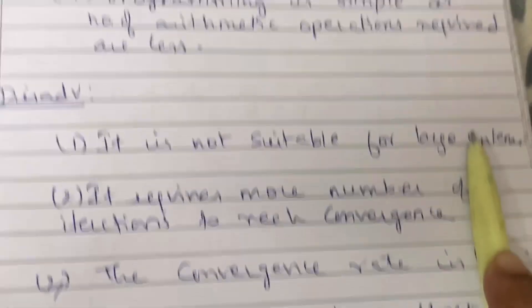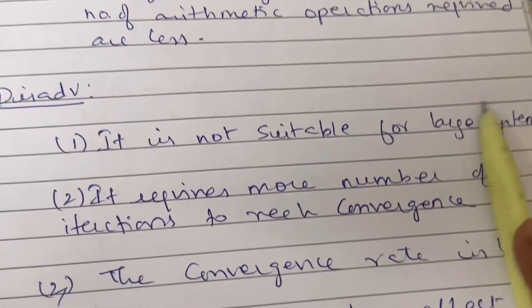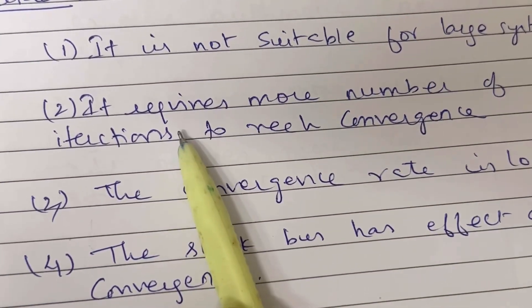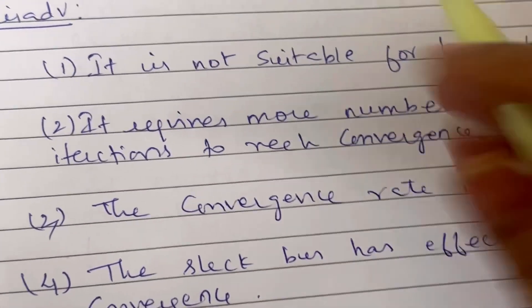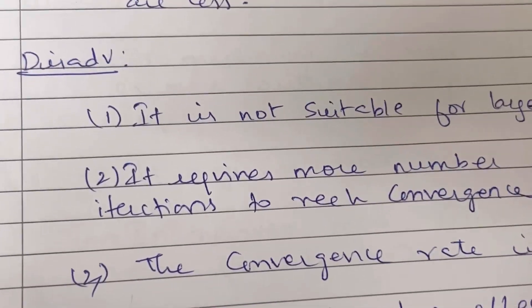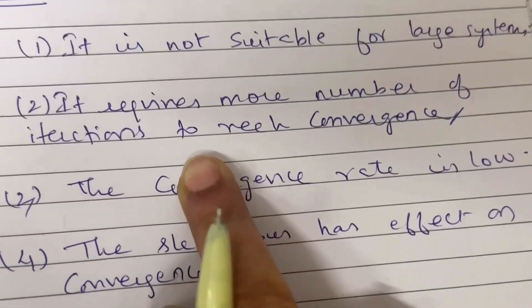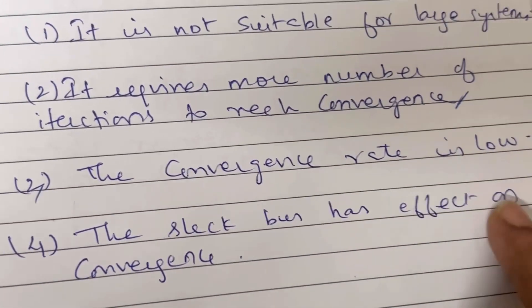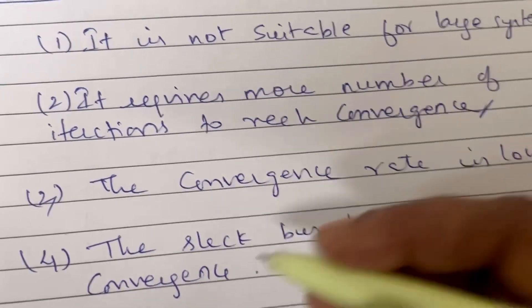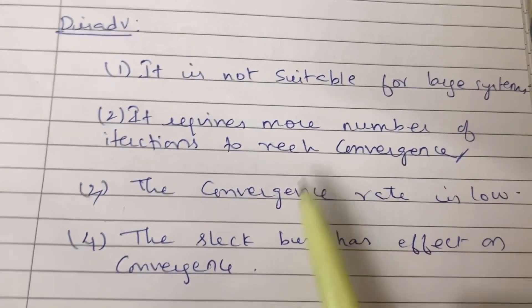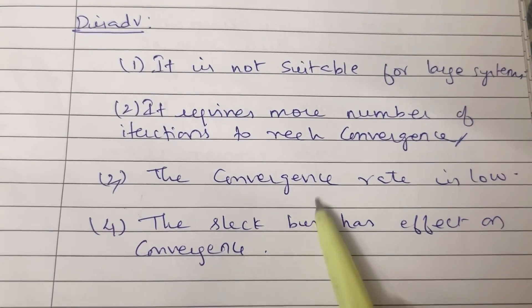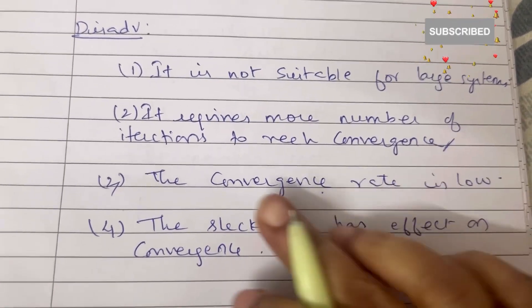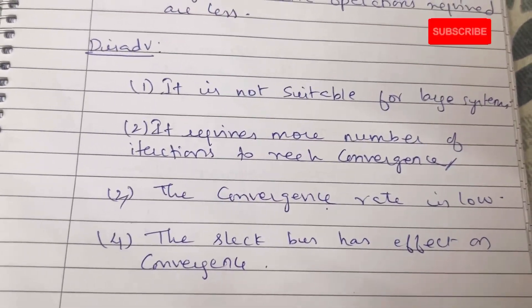Disadvantages of Gauss Seidel method: it is not suitable for large systems — opposite to its advantage of being suitable for small systems. It requires more number of iterations to reach convergence. The convergence rate is low. The slack bus has an effect on convergence. Convergence is the point where all buses come and meet at one point.